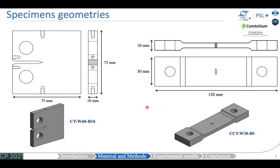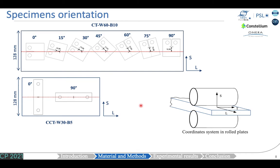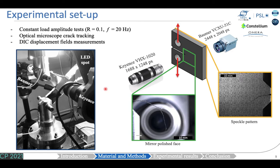The main difference between these two geometries is T-stress values, which are positive in the CT specimens and negative in the CCTs. The specimens were extracted in the LS plane at the center of the plate thickness, following different directions in order to estimate crack growth anisotropy. For the CT specimens, sampling is done every 15 degrees. For the CCT specimens, only S-L and L-S orientations are tested.